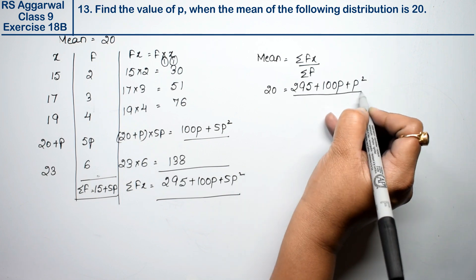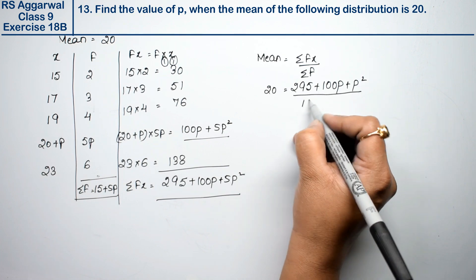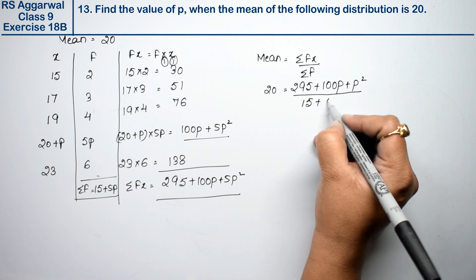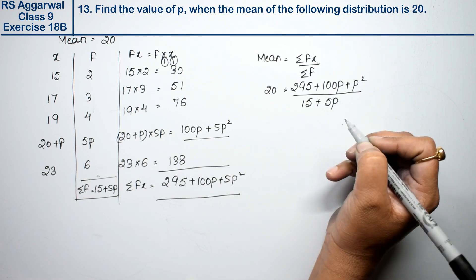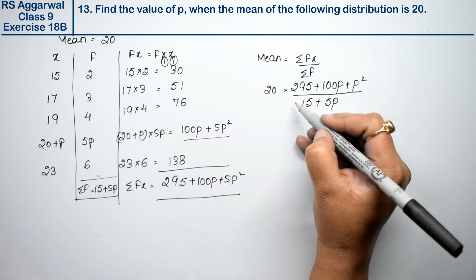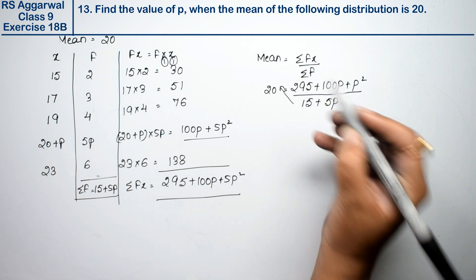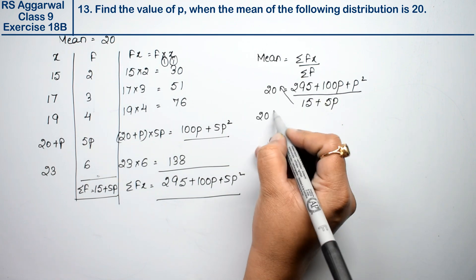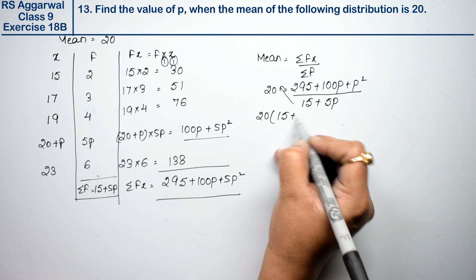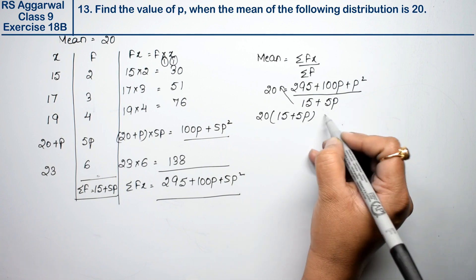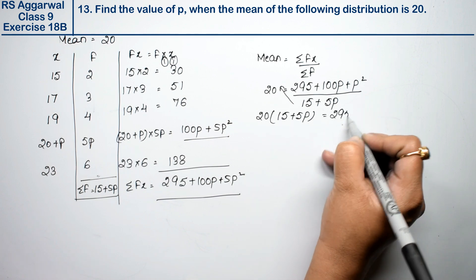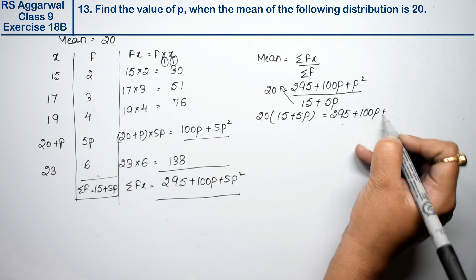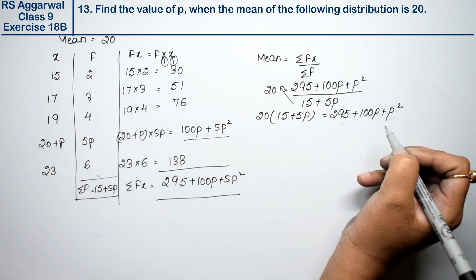These last 4-5 questions are very important. Please try to do this very carefully. It's very important for the exam. Cross multiplying: 20 times (15 plus 5p) equals 295 plus 100p plus 5p square.